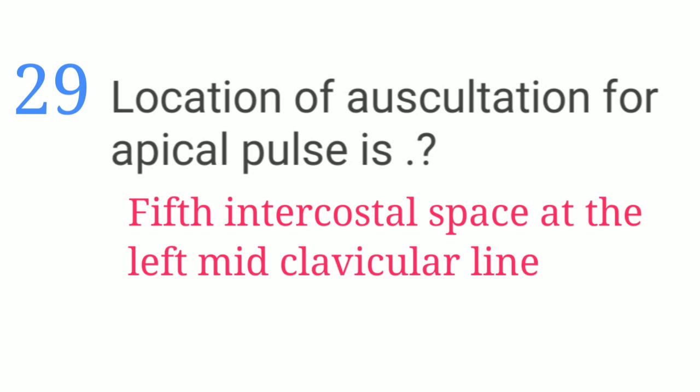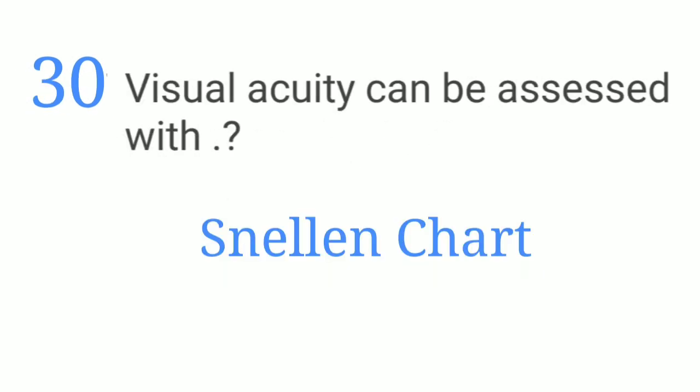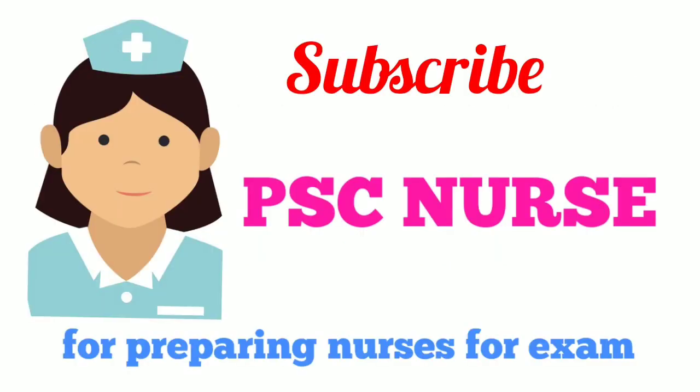The location for auscultation of the apical pulse is the 5th intercostal space at the left mid-clavicular line. Visual acuity can be assessed by the Snellen chart. Thank you for watching.